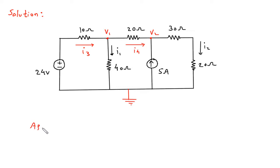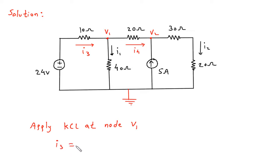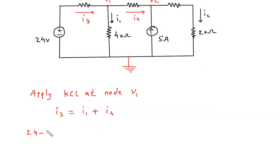Now we will apply KCL at node V1. I3 is equal to I1 plus I4. I3 is (24 minus V1) by 10, so (24 minus V1) by 10 is equal to I1 plus I4.